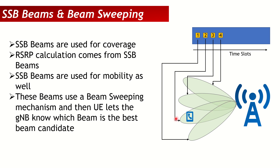The UE determines that SSB beam number two is the best candidate and reports this to the gNodeB. The gNodeB now knows where the UE is located, because it knows beam 2 points in that direction. So the UE calculates the best beam, the gNodeB learns the UE's location, and can then direct traffic using the most optimized beam.